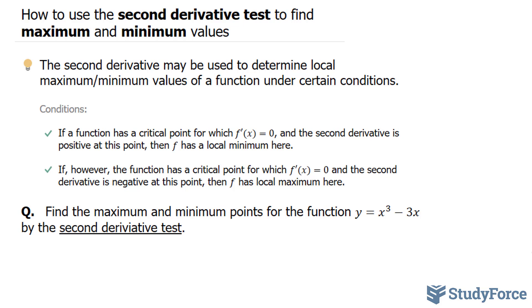I do have a video on how to find the maximum and minimum values of a function without the use of the second derivative test, but it's a little more involved. This one is more clear cut. The question reads, find the maximum and minimum points for the function y is equal to x cubed minus 3x by the second derivative test.